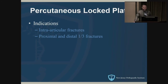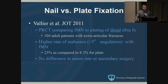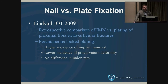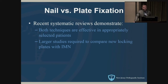Another option is percutaneous locking plating, particularly for fractures close to the joint — above or below the mid-shaft. A prospective randomized controlled JOT study found no difference in union rate or secondary surgery, though the nail had a slightly higher malunion rate. A retrospective JOT study comparing nailing versus plating of proximal tibia fractures found locking plating had lower malunion incidence, with no difference in union rate, but symptomatic hardware is a concern. Since those studies, many reviews suggest it's essentially dealer's choice — we need more data on newer plates to make firm conclusions.